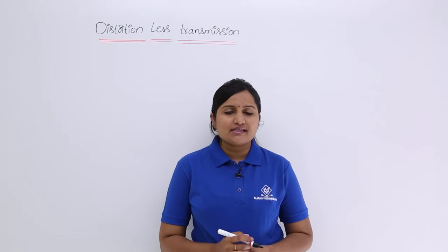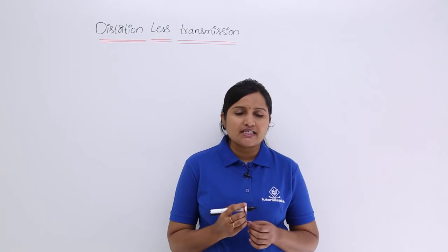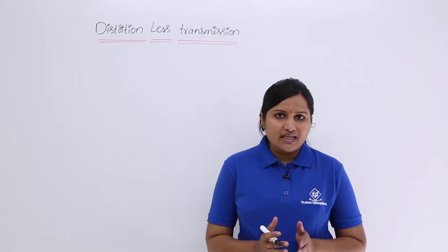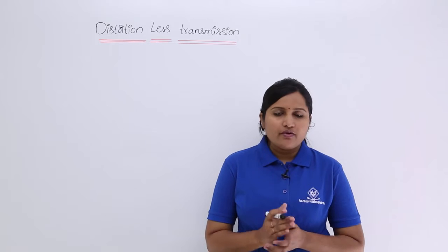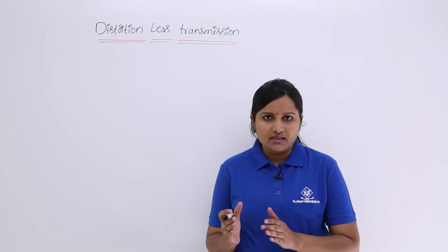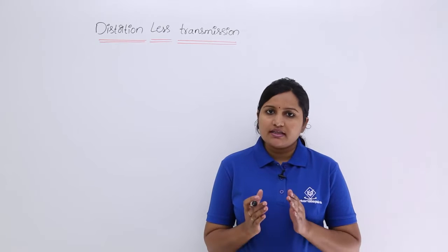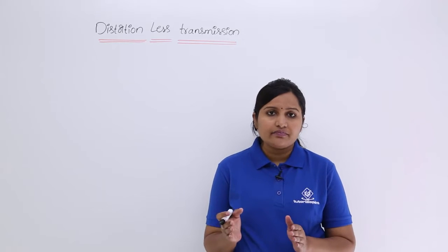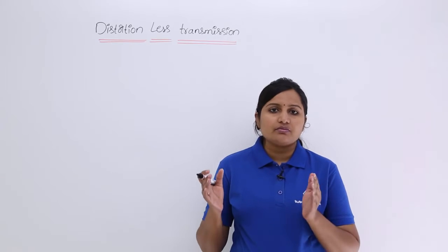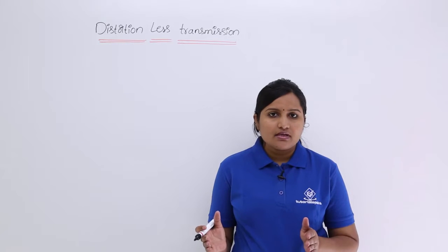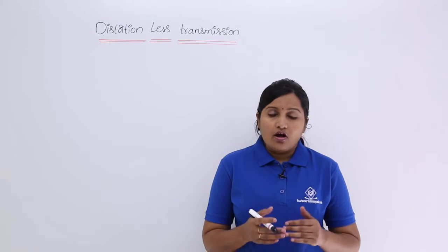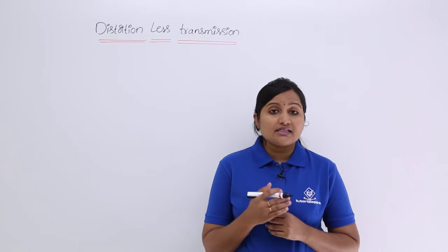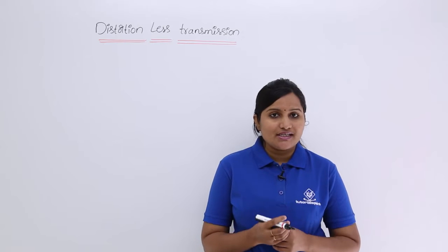In this video we are going to discuss distortionless transmission of a signal. As the name indicates, a transmission is distortionless whenever we get the same signal after transmitting. For example, if you send a signal and after travelling some time delay TD, the signal is the same, then that is said to be distortionless transmission.